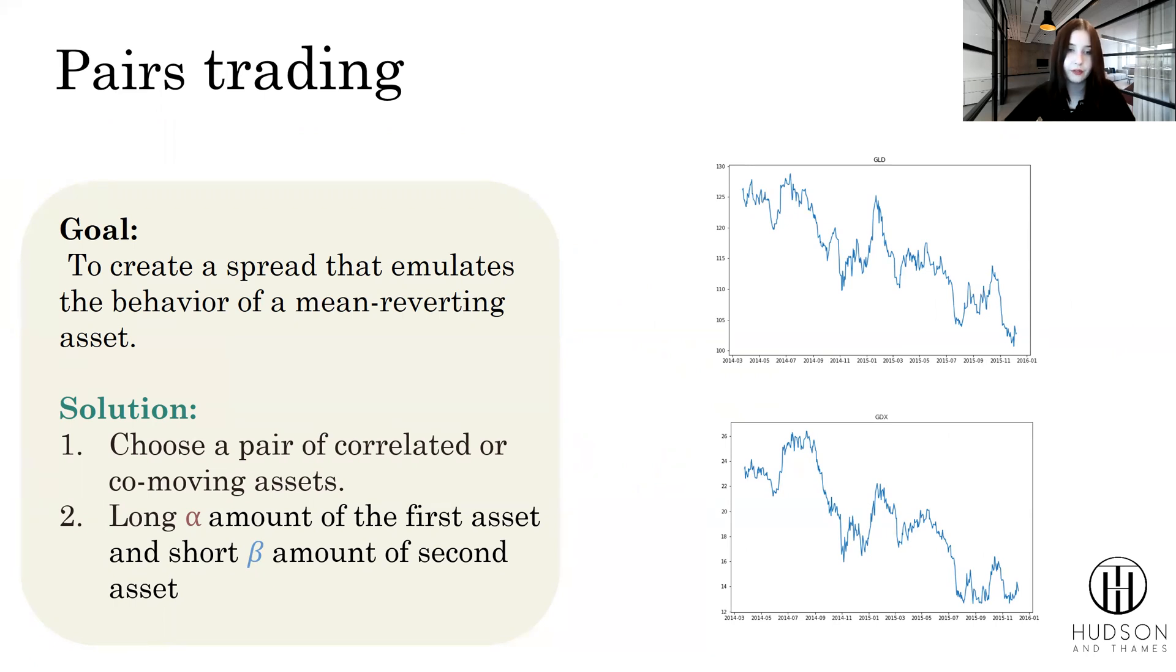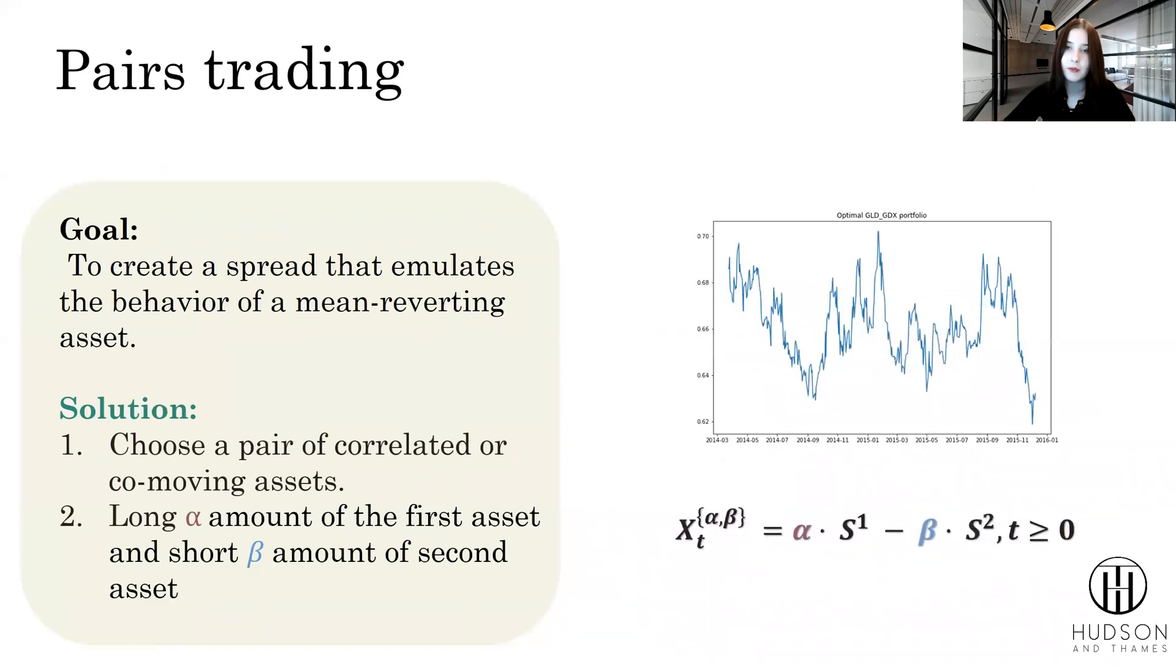Then we long alpha amount of the first asset and short beta amount of the second asset to achieve the so-called optimal mean reverting portfolio. The goodness of mean reversion is defined by the ratio between asset A and asset B. So how do we find this optimal ratio?